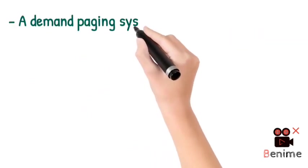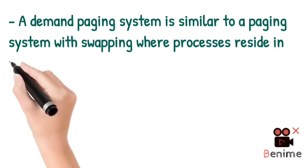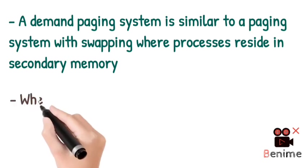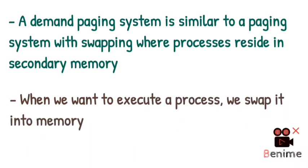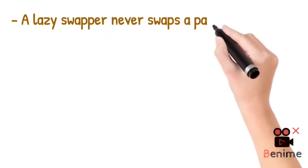The demand paging system is similar to the paging system discussed in the previous lecture. There is also swapping here — when we swap out a process, we save it in secondary memory, specifically the disk. When we execute the process, we swap it from the disk into memory. We swap in only the same pages we need, with the help of a swapper called a lazy swapper. The lazy swapper does not swap a page into memory unless it is needed.